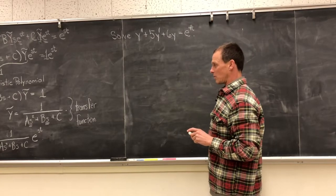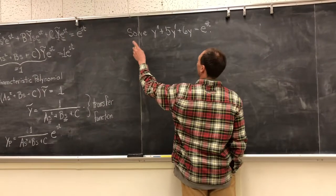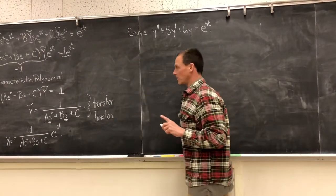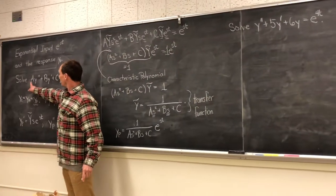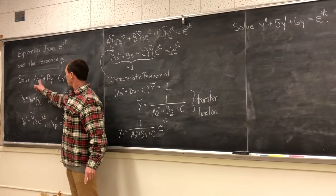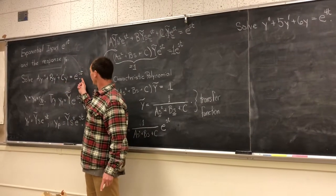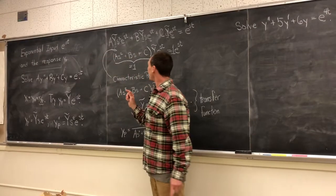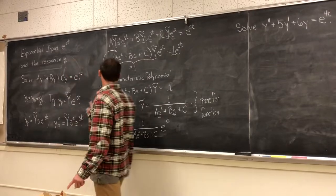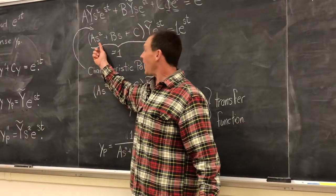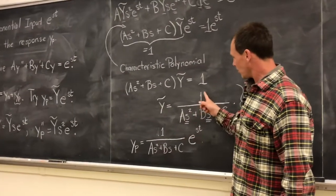If we look back at our work that we did originally, we have this problem. We have our characteristic equation. Let's come back over here. Here's our original problem: Ay'' + By' + Cy = e^(st). And notice that what we found was that the y primes become replaced with s, and then those s's become our transfer function. So these y primes are going to be replaced with the s, which is 4.